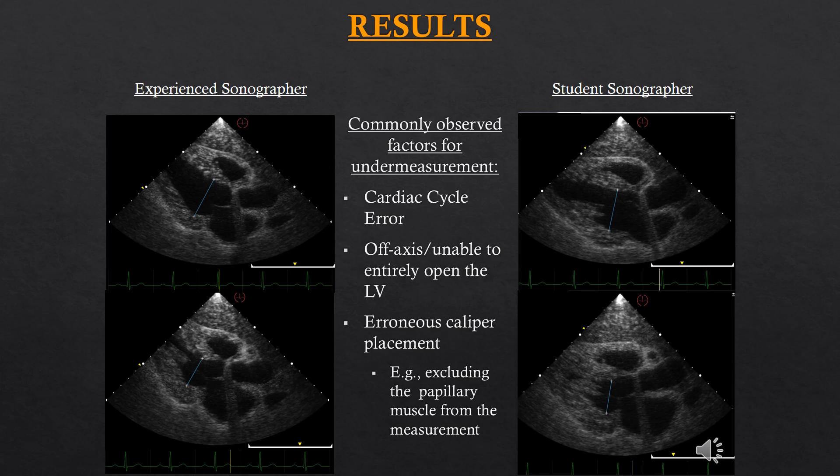For off-axis measurements — again something this study confirms — I see students struggle trying to get the perfect on-axis image with the LV fully open, so it was great to see this study confirming my observation. As mentioned before, erroneous caliper measurements result from having difficulty delineating certain anatomical structures, particularly including or not excluding the papillary muscle when they're supposed to.